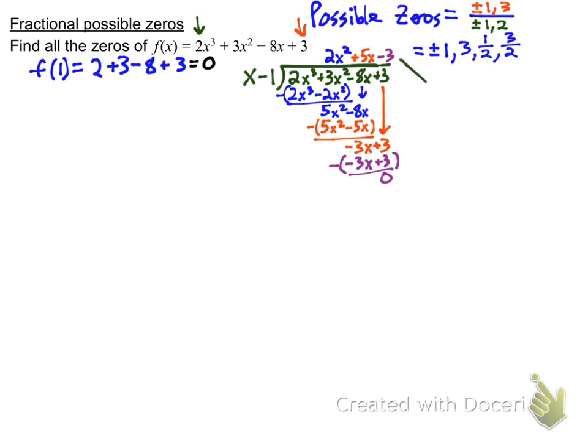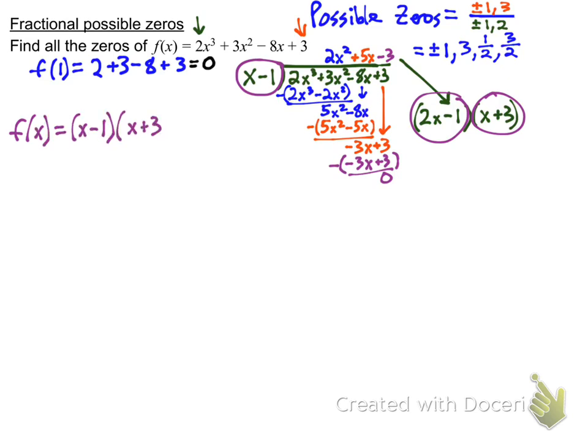2x minus 1 and x plus 3 are the factors. Now notice, 1, 2, 3. Those are the three factors of this polynomial. Notice that the zeros then are 1, negative 3, and 1 half when you set that equal to zero and solve it. That was one of the possible zeros we had. That might surprise some of you guys because you might be have thought, hey, when we need to check this, we should do x minus a half. Well, we could do that, but I want to, I want you to think for a second about how does that compare to 2x minus 1.